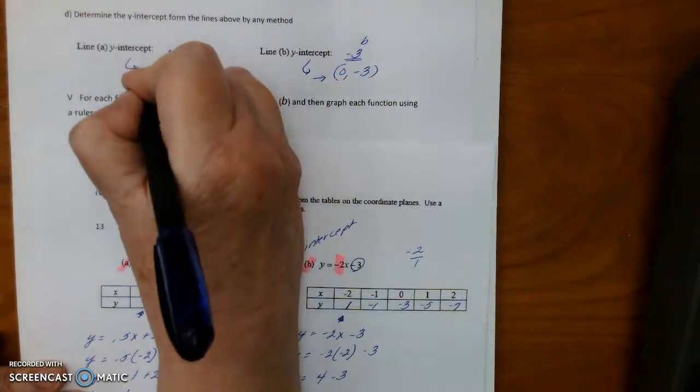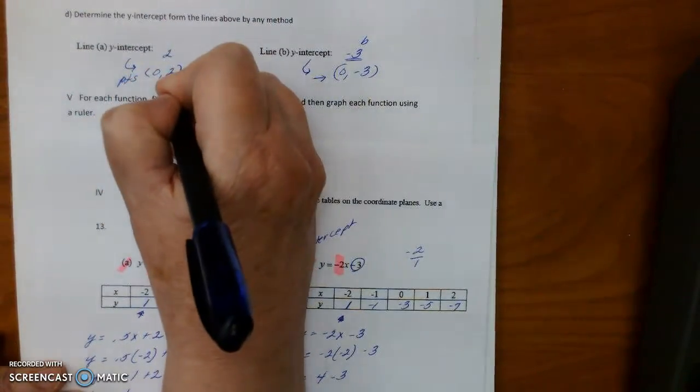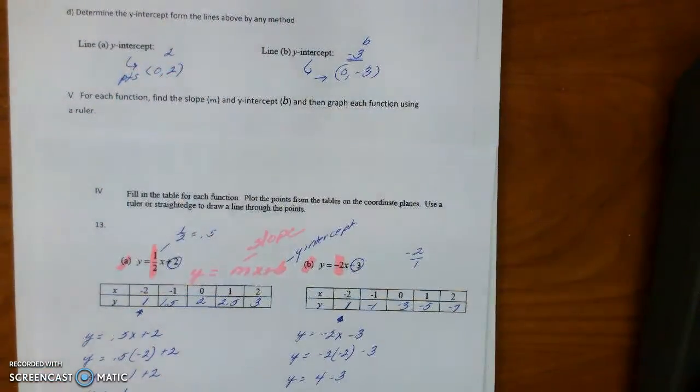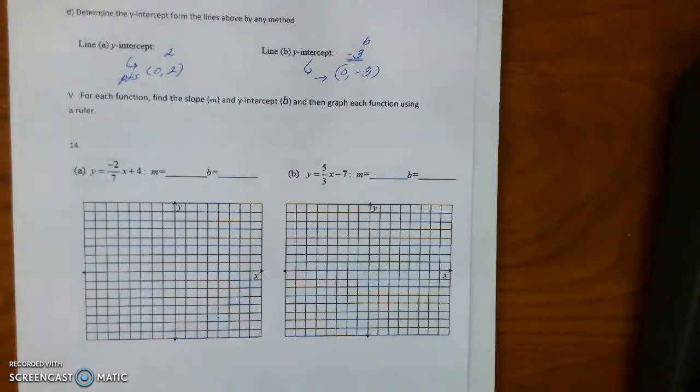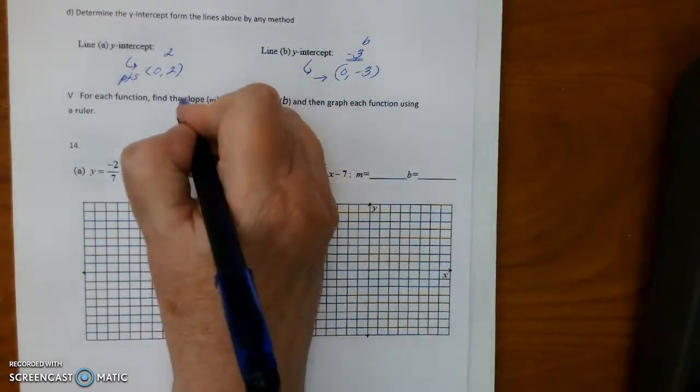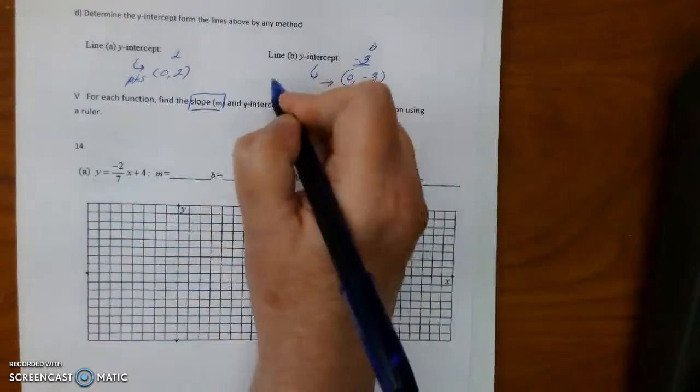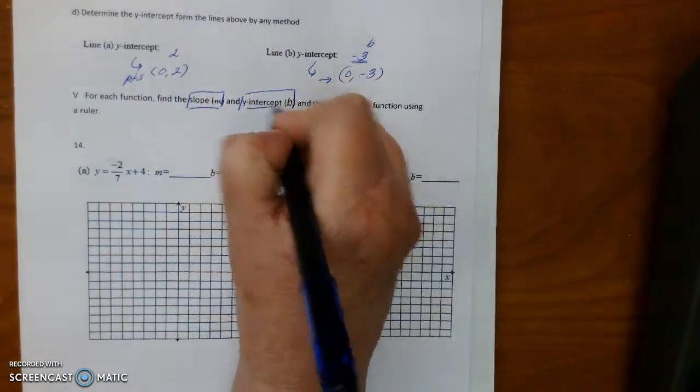These are the points, coordinate points, for the Y-intercept, okay? Now here, for each function, find the slope, which is M, and the Y-intercept, which is B, and then graph each function.